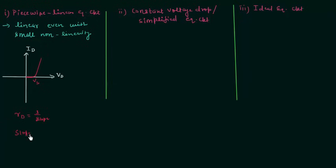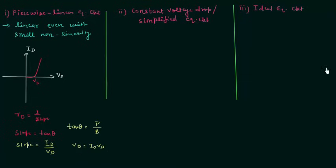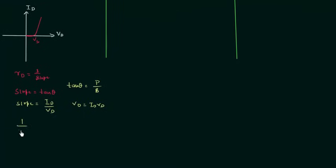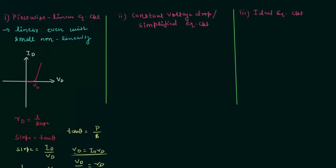We already know that slope equals tan(θ). From mathematics, tan(θ) equals perpendicular over base, so slope equals Id divided by Vd. From Ohm's law, Vd equals Id × Rd. Rearranging, 1 divided by slope equals Vd divided by Id. Dividing both sides by Id gives Vd/Id equals Rd. So the diode resistance Rd equals 1 divided by the slope, and by calculating the slope we can easily find out the diode resistance.